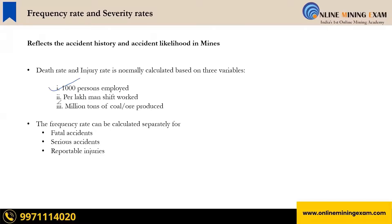To recap, the three parameters are: first, per thousand persons employed — that is 10 to the power three; second, per lakh man-shift work — that is 10 to the power five; and third, per million ton of coal production — that is 10 to the power six.